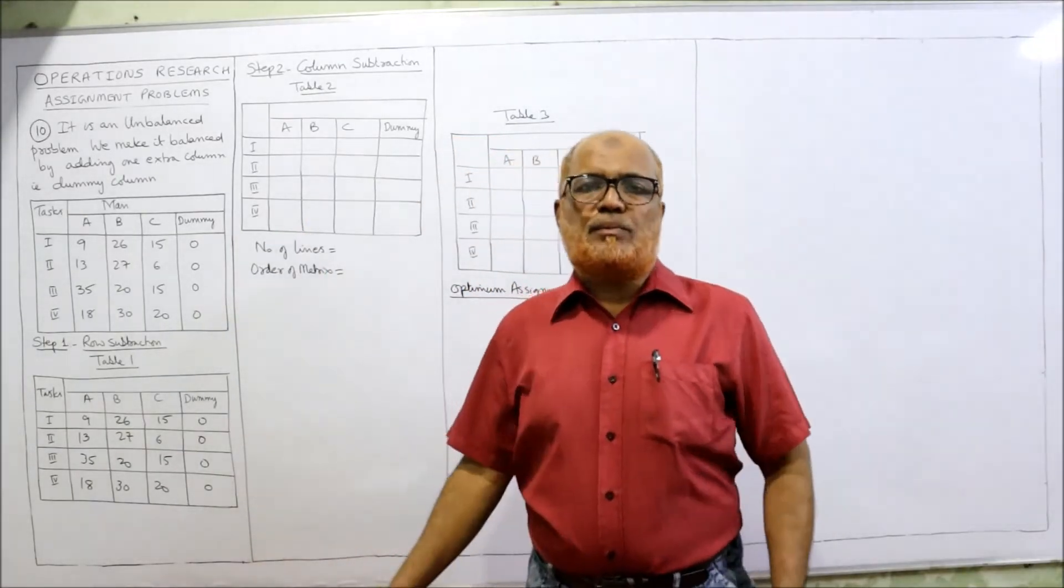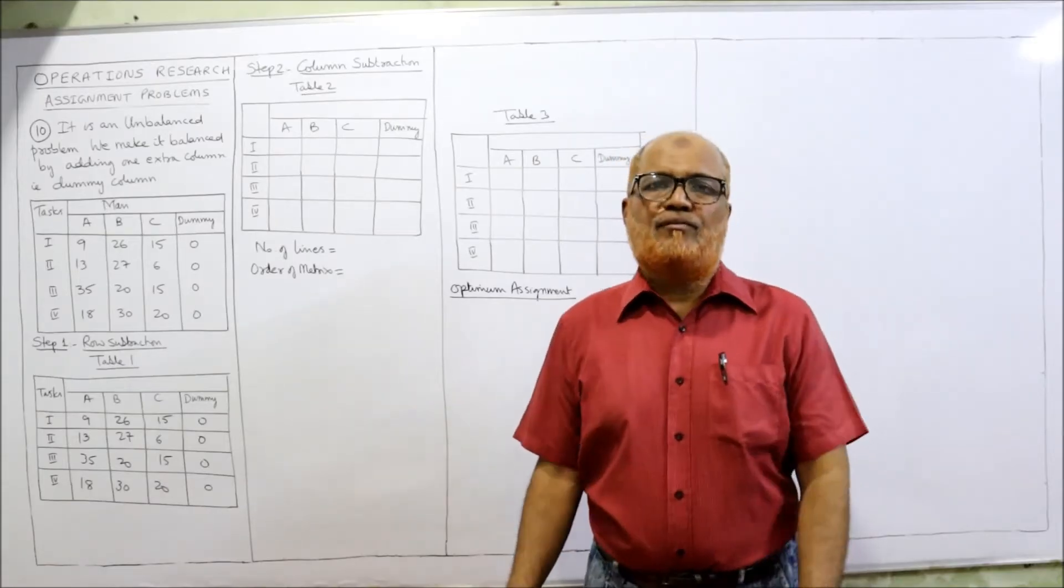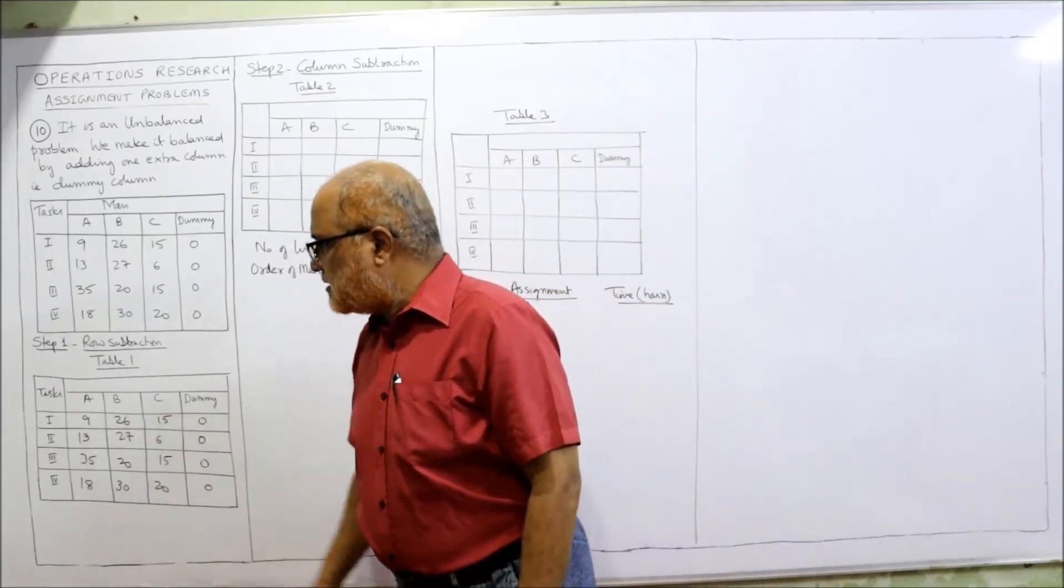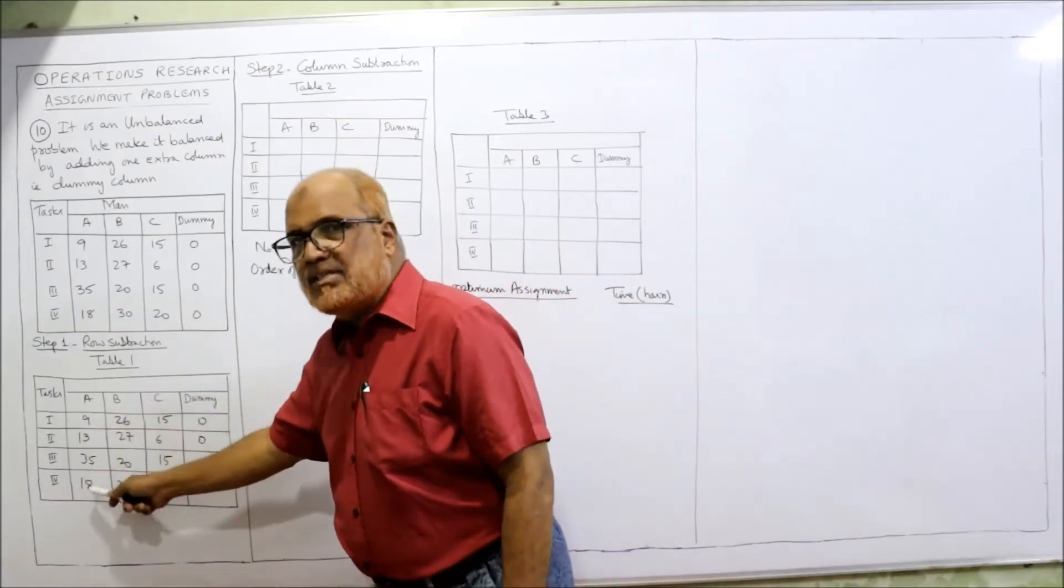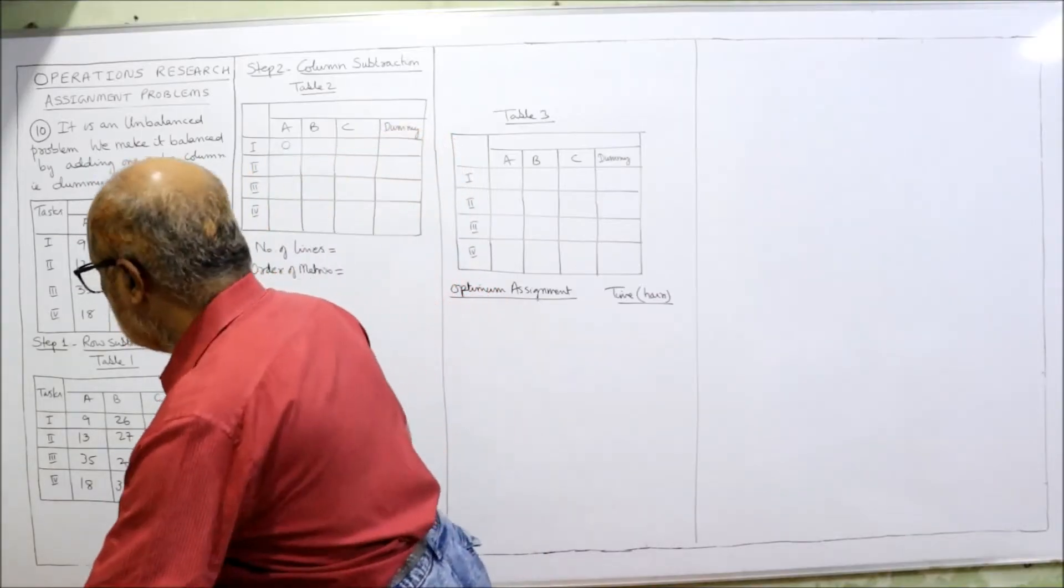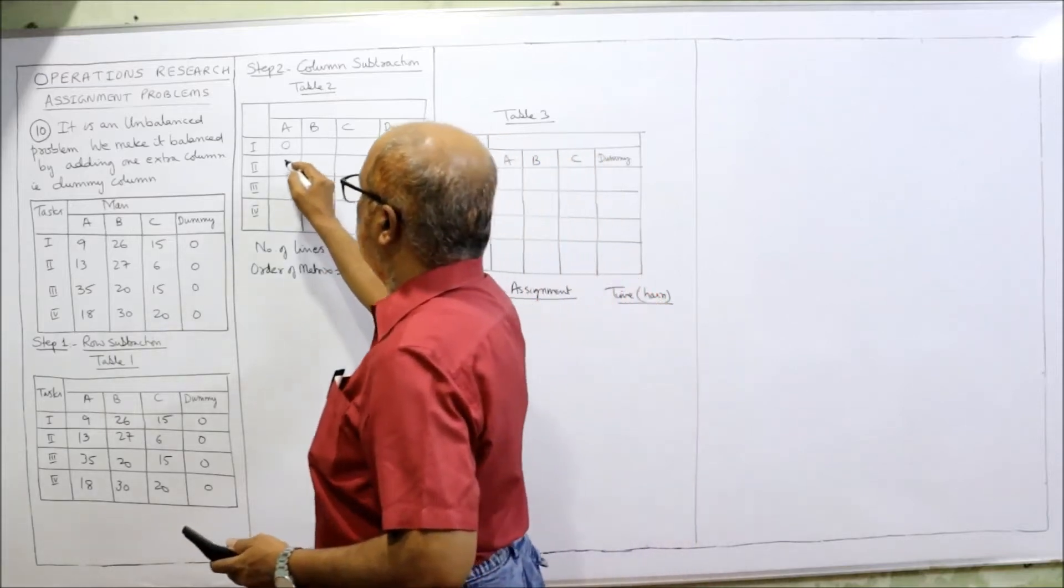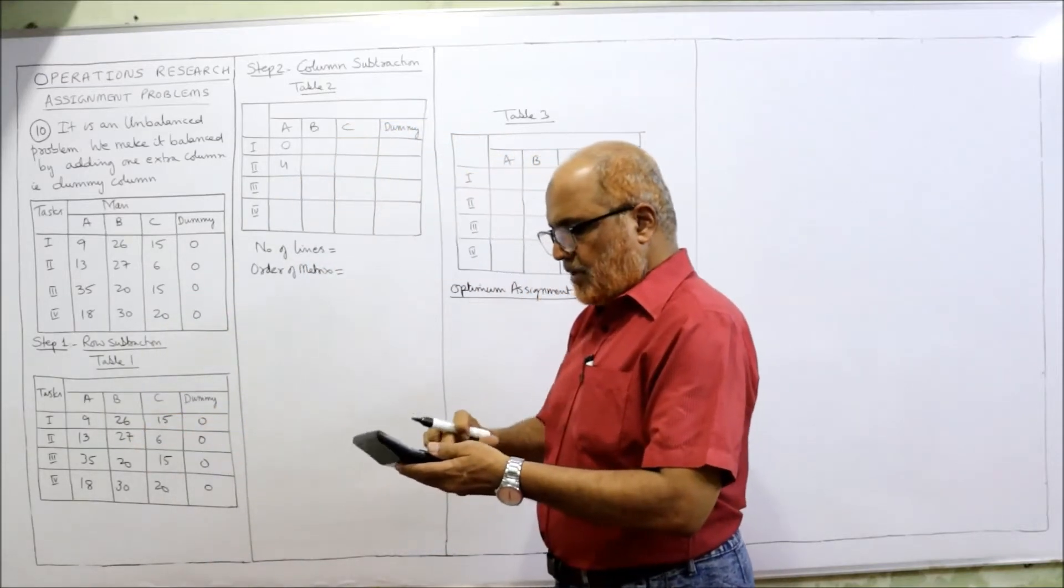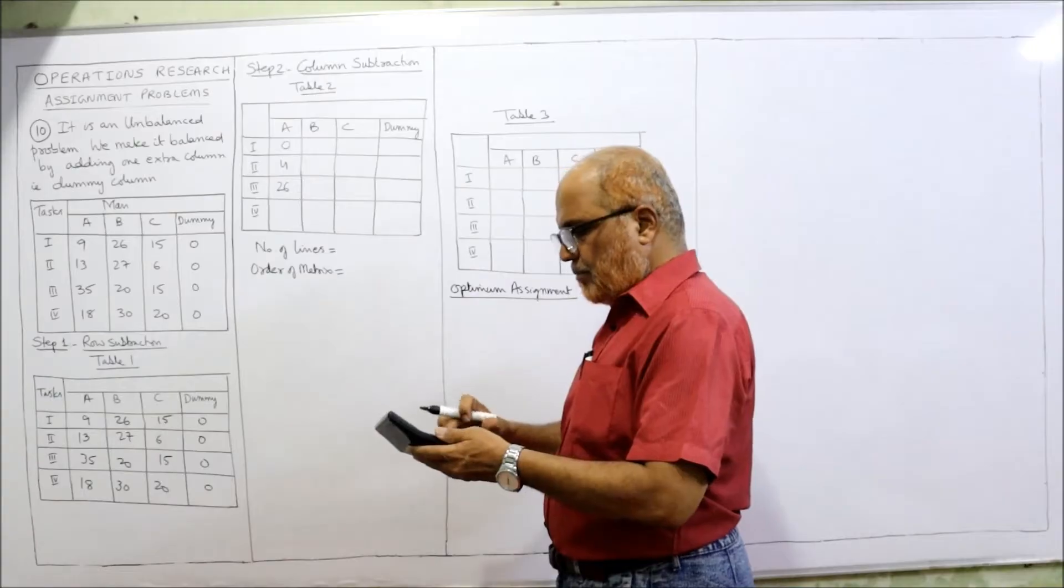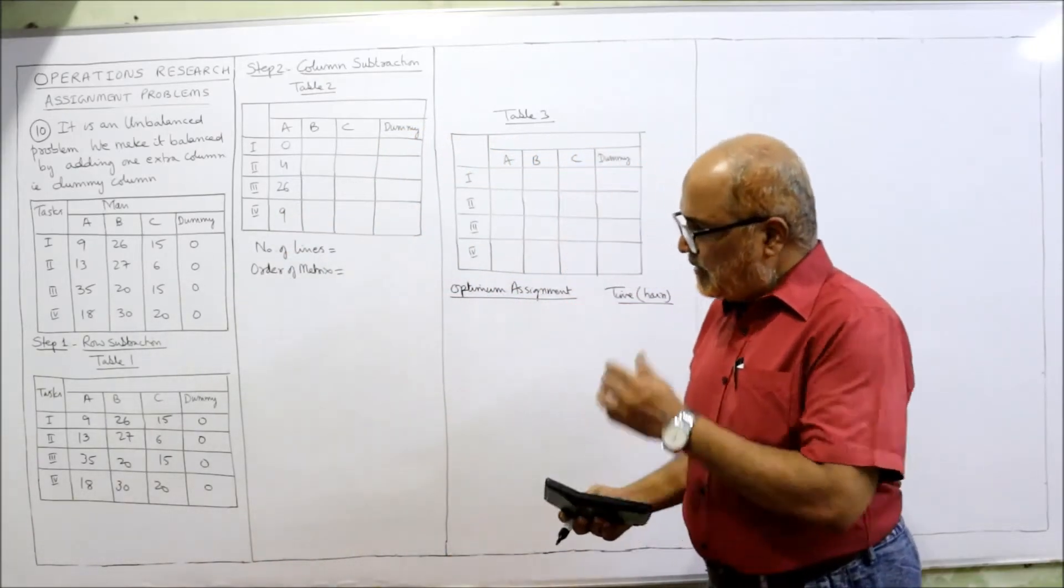Second step is column subtraction. In column subtraction, subtract the minimum element in each column from the corresponding element of that column. First column minimum is 9, so 9 minus 9 = 0, next 13 minus 9 = 4, next 35 minus 9 = 26, next 18 minus 9 = 9. First column completed. Second column minimum is 20, so 26 minus 20 = 6, 27 minus 20 = 7, 20 minus 20 =